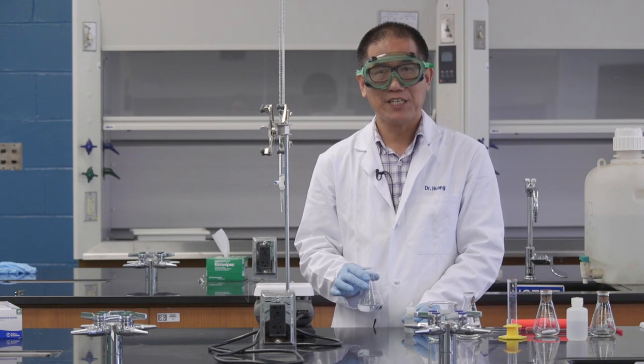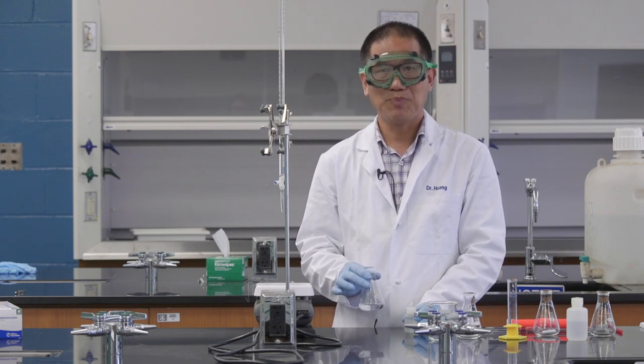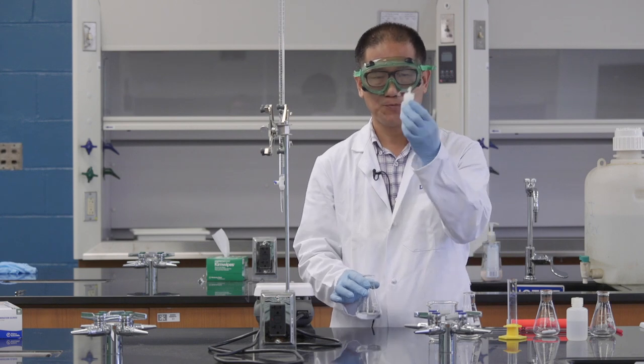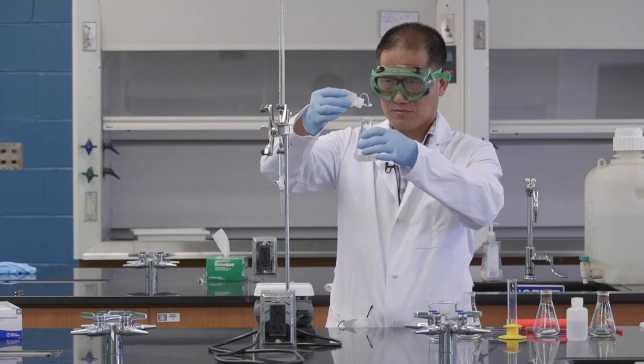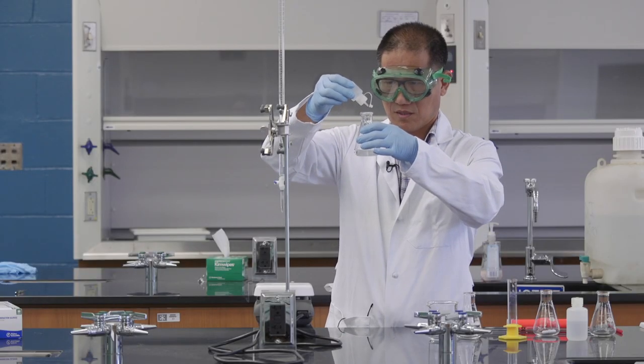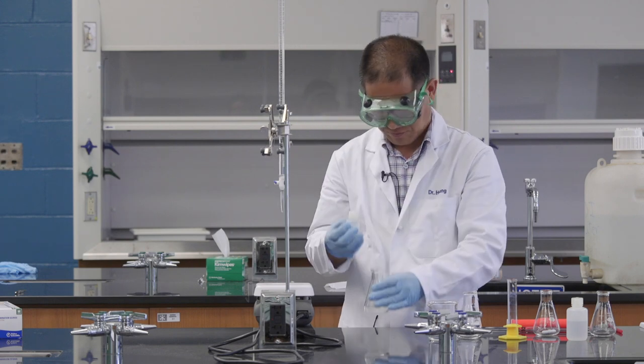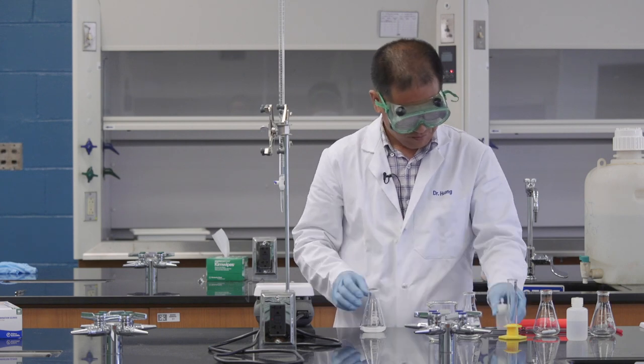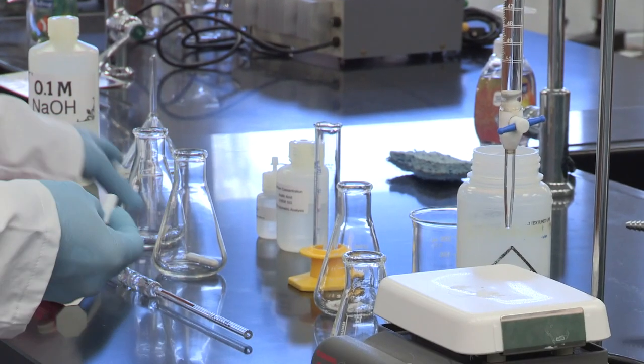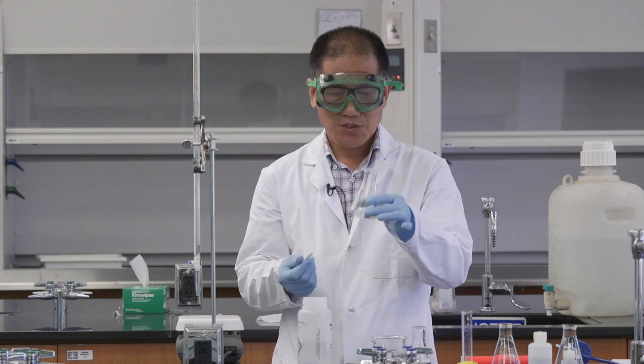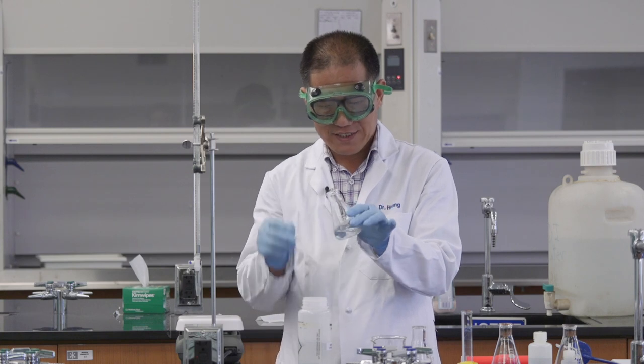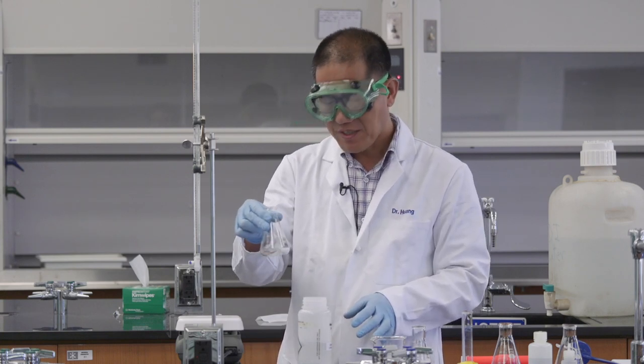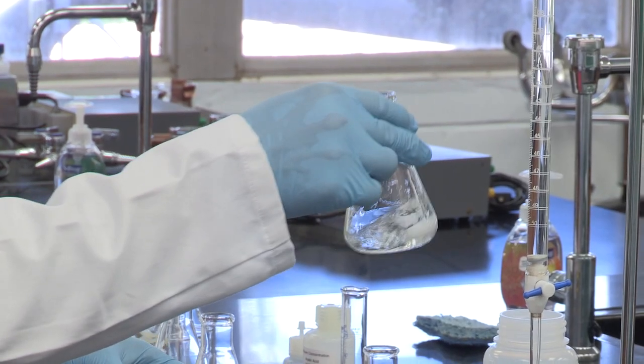After you dissolve the KHP, don't forget to add the acid-base indicator, which is in this small bottle. You only need to add about three to five drops. Now, I'm going to add the stir bar into this Erlenmeyer flask. I want to stir that so the dissolving can be very fast. At the same time, I can swirl this so it will dissolve faster.